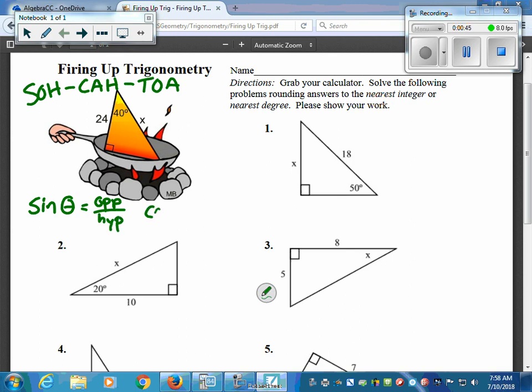And then cosine, the middle one - and a lot of times I use theta, it's just a Greek symbol, same thing like a variable like an X - that's going to be adjacent over hypotenuse. And then the last one, tangent: tangent of theta equals opposite over adjacent.